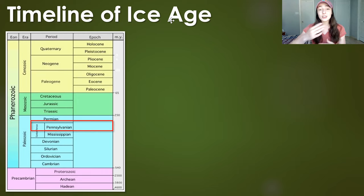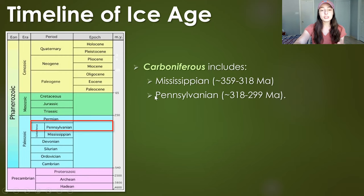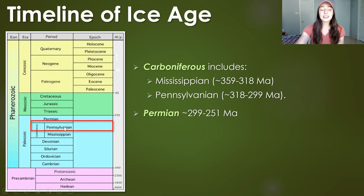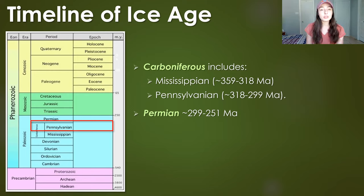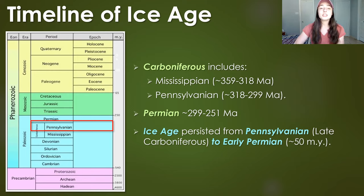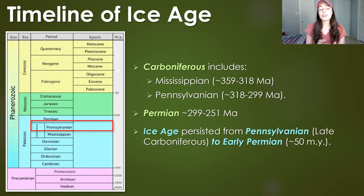First things first, the timeline of this ice age occurred in the Pennsylvanian period, or the later half of the Carboniferous period in the Paleozoic Era. This second half of the Carboniferous, or Pennsylvanian period, occurred from around 318 to 299 million years ago. The ice age continued into the early Permian, which occurred from around 299 to 251 million years ago.